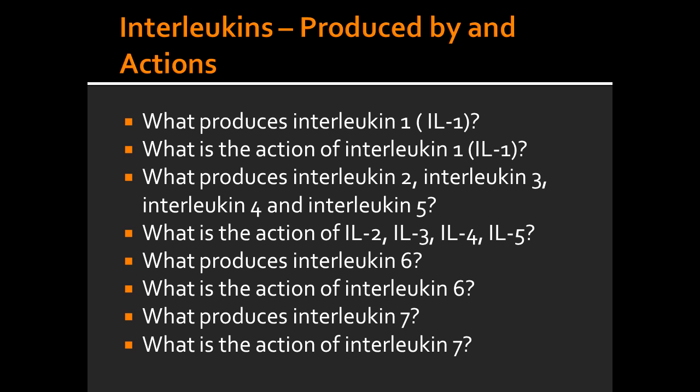What produces interleukin 2, 3, 4, and 5? Interleukin 2, 3, 4, and 5 is produced by T-cells. What is the function of interleukin 2, 3, 4, and 5? The function of interleukin 2, 3, 4, and 5 is to activate other cells.